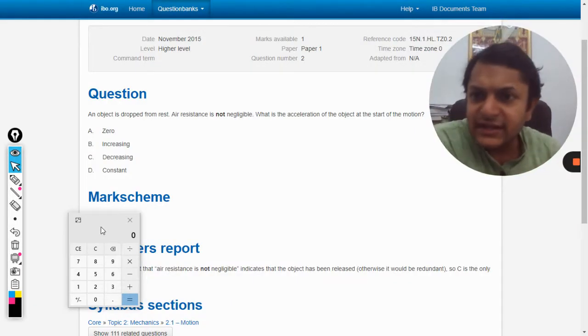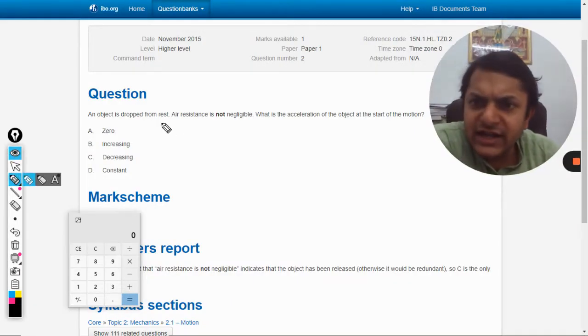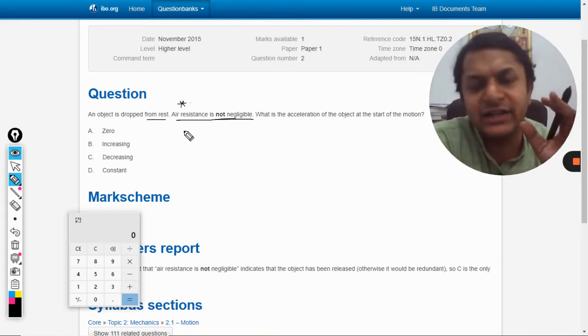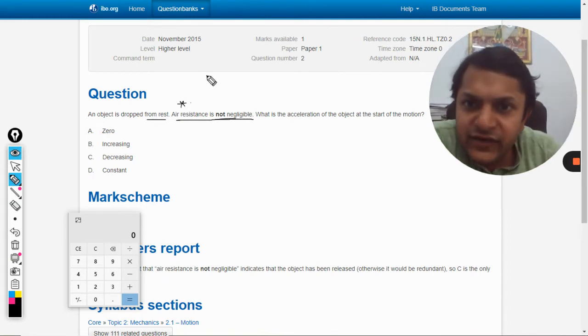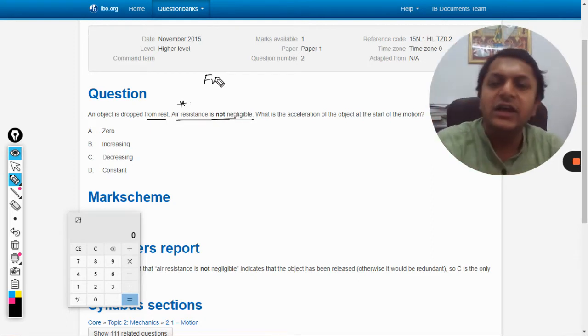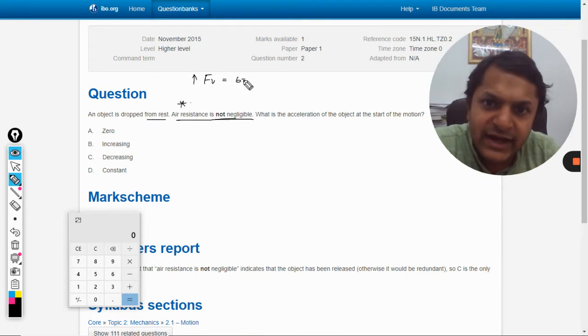Okay dear students, let us go for this question: an object is dropped from rest, air resistance is not negligible. This is a very important point - air resistance is not negligible, which means there will be a drag force. As the ball falls through the air, there will be an upward drag force.